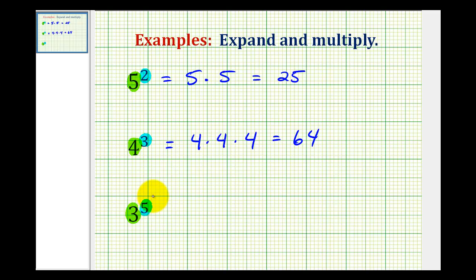And for the last example, we have three raised to the fifth power, or just three to the fifth. And since the exponent is five, and the base is three, we're going to be multiplying five factors of three. So this is the expanded form, and now we'll determine this product. Well, three times three is nine, nine times three is twenty-seven, twenty-seven times three is eighty-one, and eighty-one times three is two hundred forty-three.